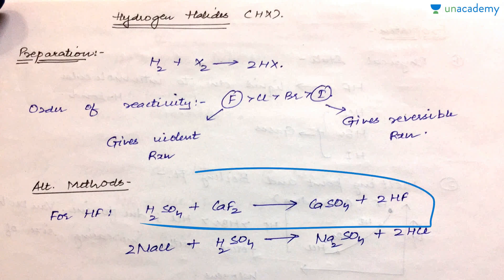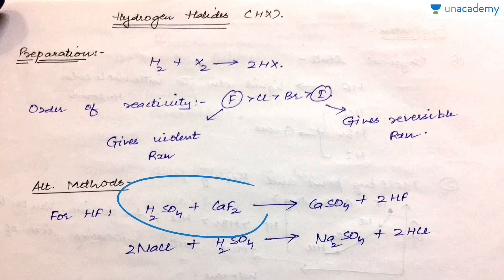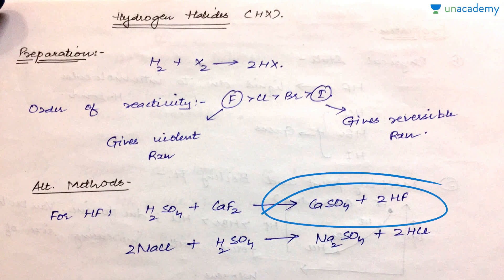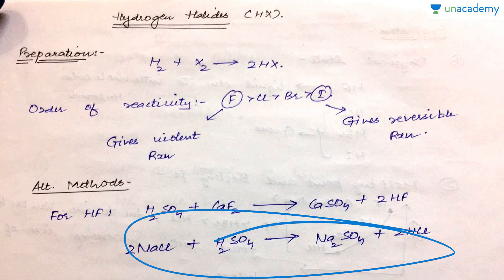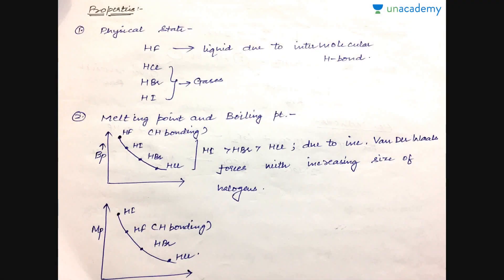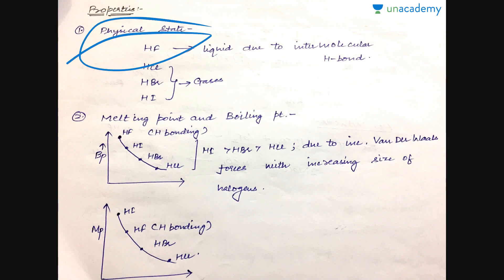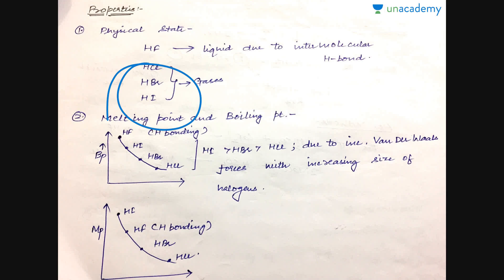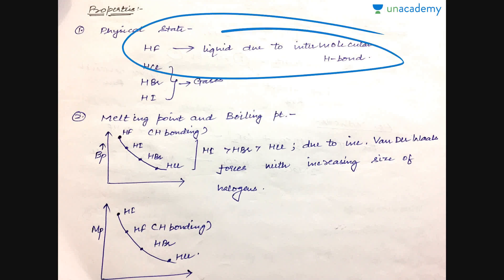Other alternate methods include: for HF preparation, calcium fluoride is treated with sulfuric acid to give CaSO₄ and HF. When NaCl is treated with H₂SO₄ we get HCl and Na₂SO₄. Regarding physical state, HF is liquid while all other hydrogen halides are gases, because HF exhibits intense hydrogen bonding — similar to ammonia and water being liquids due to intermolecular hydrogen bonding — whereas HCl, HBr, and HI lack such interactions.